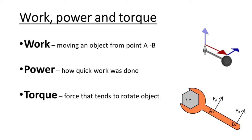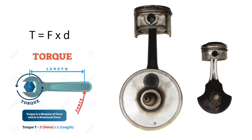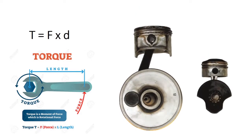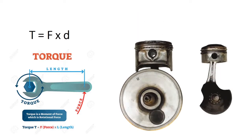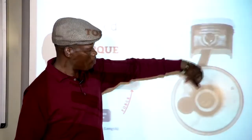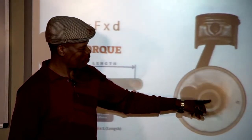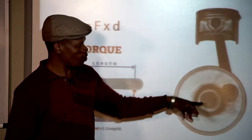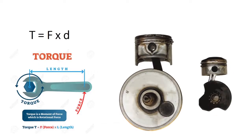Torque is produced on the piston or the cylinder itself. The power is generated in the cylinder — which can have four, six, or eight cylinders. The torque is the force applied multiplied by the distance. The force applied onto the piston to rotate the crankshaft depends on the distance from the centre of the crankshaft to the centre of the connecting rod. That distance determines how much torque the engine produces.